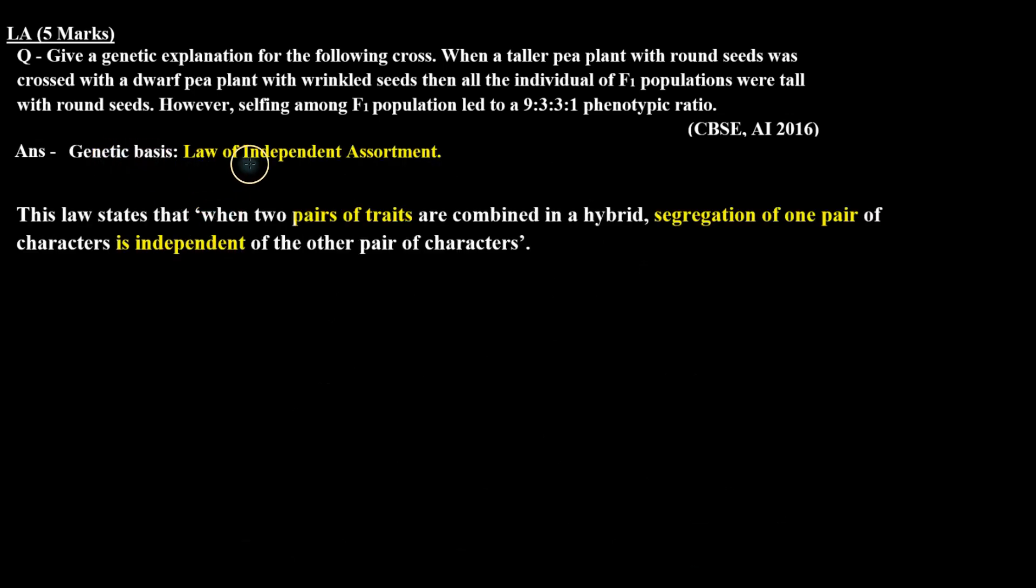So genetic basis: law of independent assortment. This law states that when two pairs of traits are combined in a hybrid, segregation of one pair of characters is independent of the other pair of characters. So I hope this question is clear to you. Thank you.